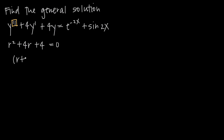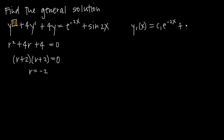When we factor, we get (r + 2)(r + 2) = 0, so r = -2. We have equal real roots — two real roots both equal to negative 2. When we have equal real roots, we use the formula for the complementary solution: y_c(x) = c₁e^(-2x) + c₂xe^(-2x). This follows the formula for equal real roots, which is the same as distinct real roots except we include that extra x to distinguish the two terms.